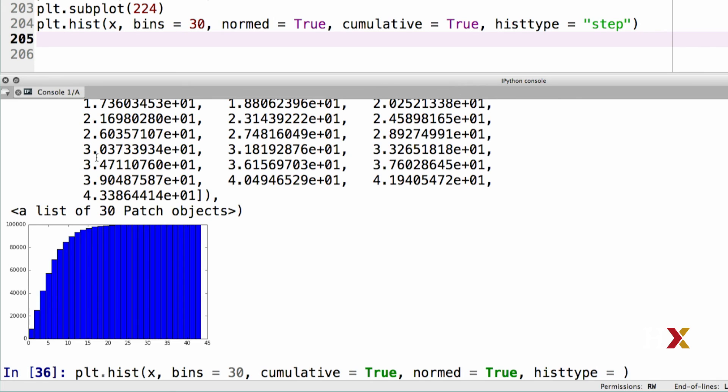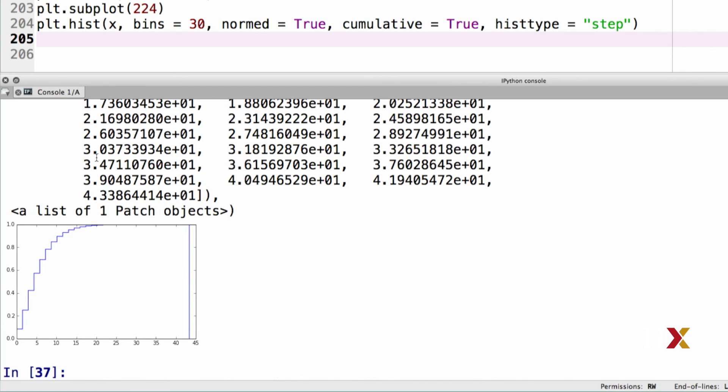I can do that by using the histype keyword argument, and I'd like to use a step histogram here. And this is the output that I get.